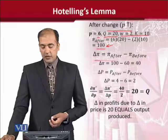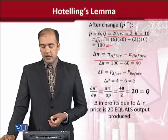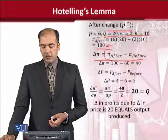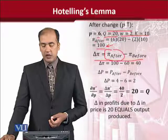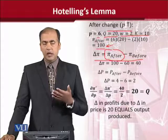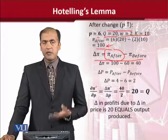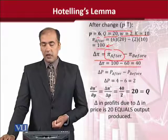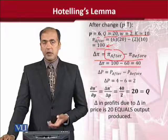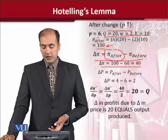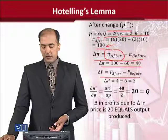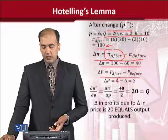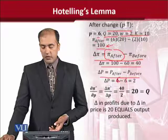Now, once you have this new value, which is known as profit after the change in price, we can also calculate its differential. And the differential would be 100 minus 60, whose value is 40. Now, the change we observed in price is 6 minus 4, which is equal to 2.